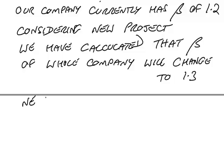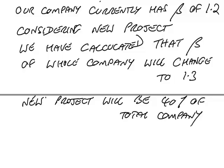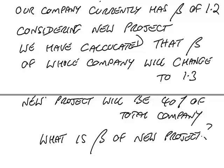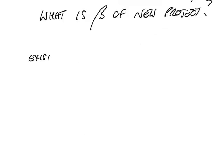Well, we're considering a new project. We have calculated, you may wonder how but it's happened, we have calculated that the beta of the whole company will change to 1.3. Well, the answer should be obvious, but tell me, does this mean the new project is more risky or less risky than we currently are? It's more risky. You add on a more risky project, the overall risk of the company goes up. Finally though, the new project will be, let's say, 40% of the total company. So be clear what I'm saying. If we take this project, 60% of the company's money is in the existing company, 40% will be in the new project. What I want to know is what is the beta of the new project.